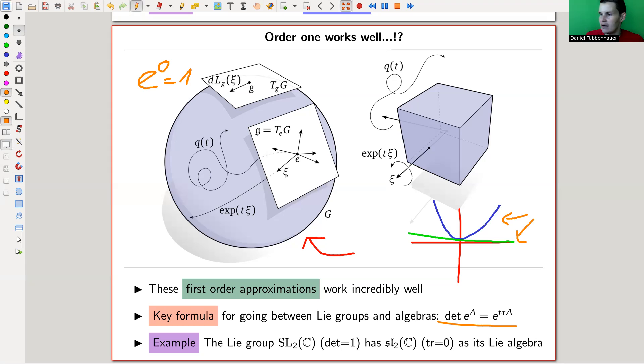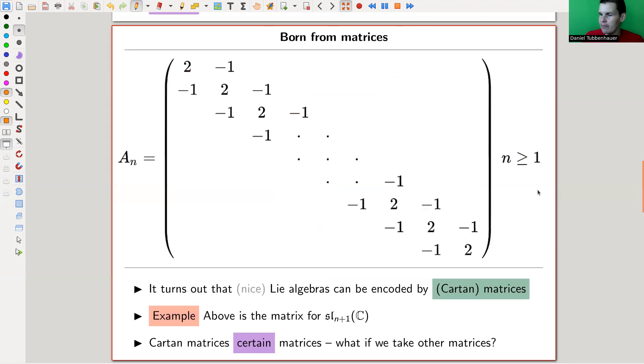That all happened with the work of Lie. People came up much later with the idea to associate a root system or a matrix to every such Lie algebra. A nice enough Lie algebra can be encoded by a matrix, which is the Cartan matrix, a matrix with certain properties. I just wrote down the Cartan matrix for the SLN family. From these matrices, they completely encode the Lie algebra itself. You can recover the Lie algebra from the matrix, and from the Lie algebra you get the matrix.